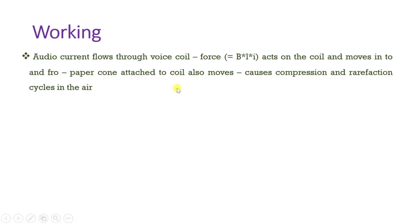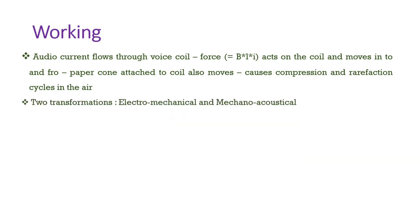In the working of the moving coil loudspeaker, an electrical signal is given to the moving coil. The force on that coil is BIL, and this force changes with respect to current I. Based on the change in force, there is to-and-fro motion of the coil. The coil is connected with the paper cone, so both move with the same vibration, generating compression and rarefaction in air, and hence sound. There are two basic transformations happening: electromechanical transformation and mechano-acoustical transformation.